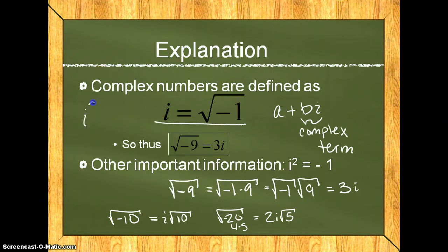Also, you'll need to know that i squared is equal to negative 1. This is going to be used in later videos as well as later chapters and sections. The reason why i squared equals negative 1 is because if i equals the square root of negative 1, and you proceed to square both sides,